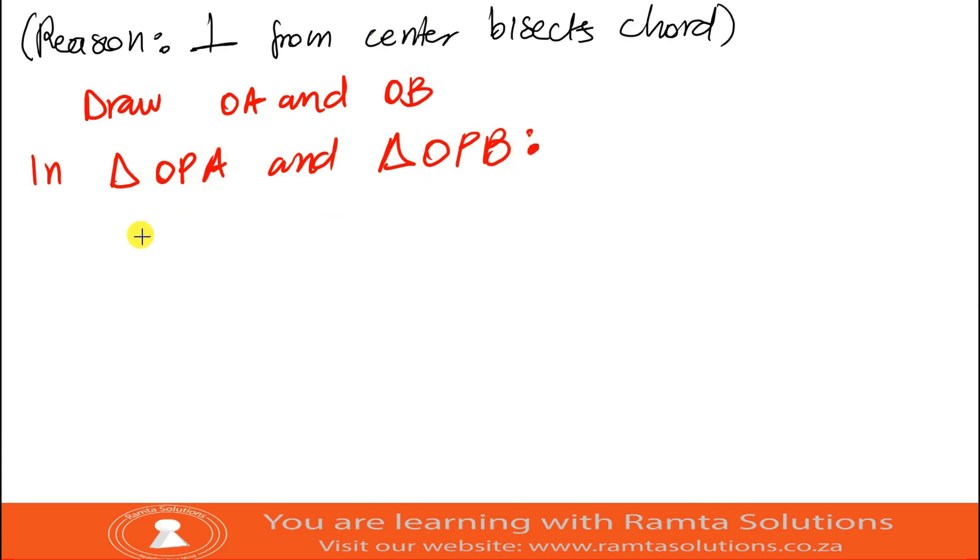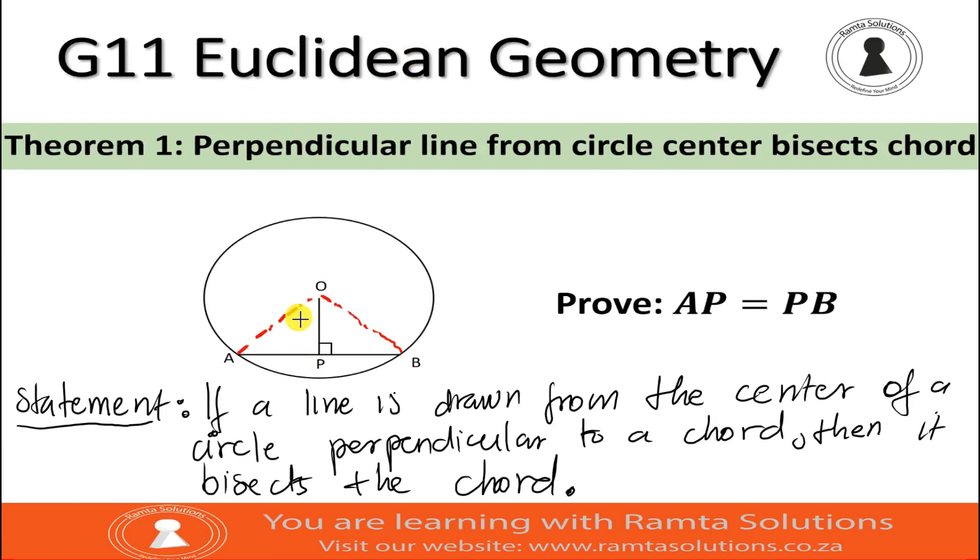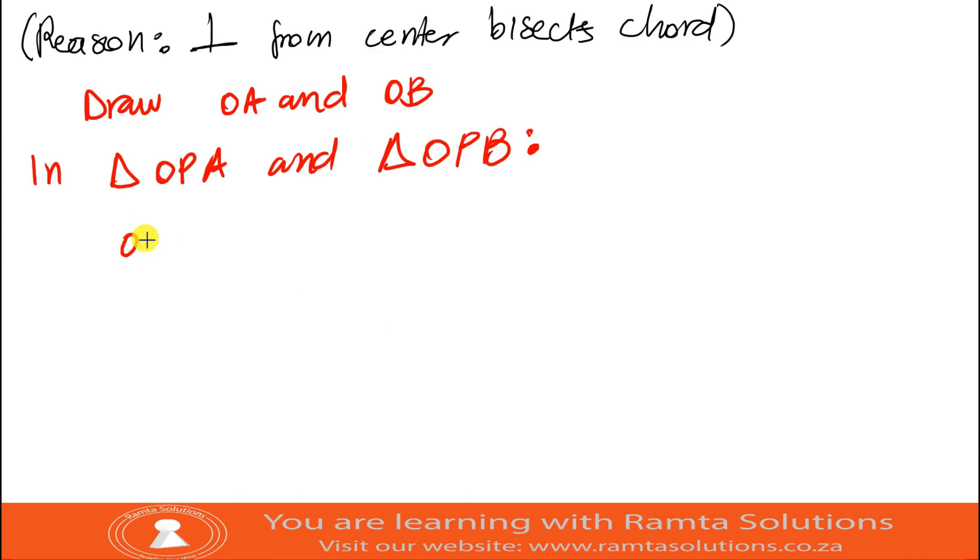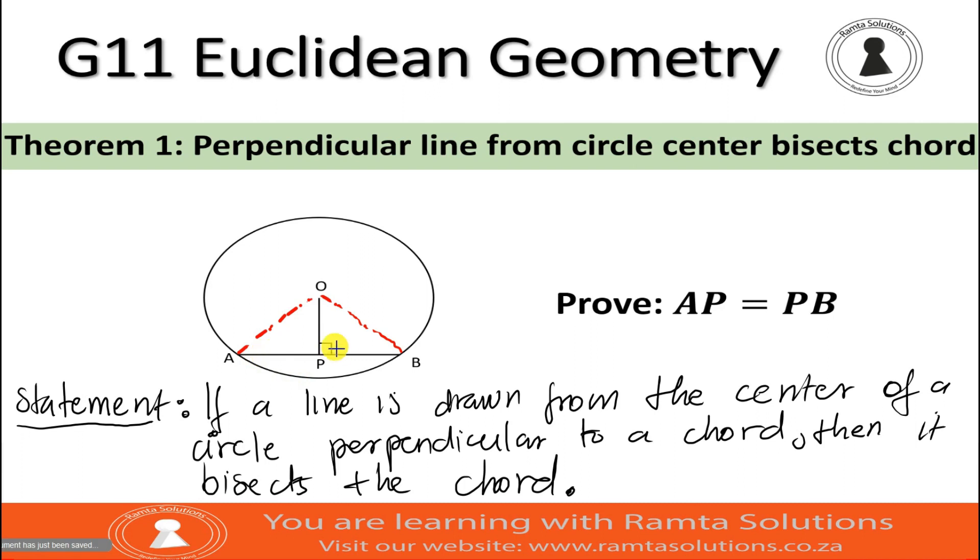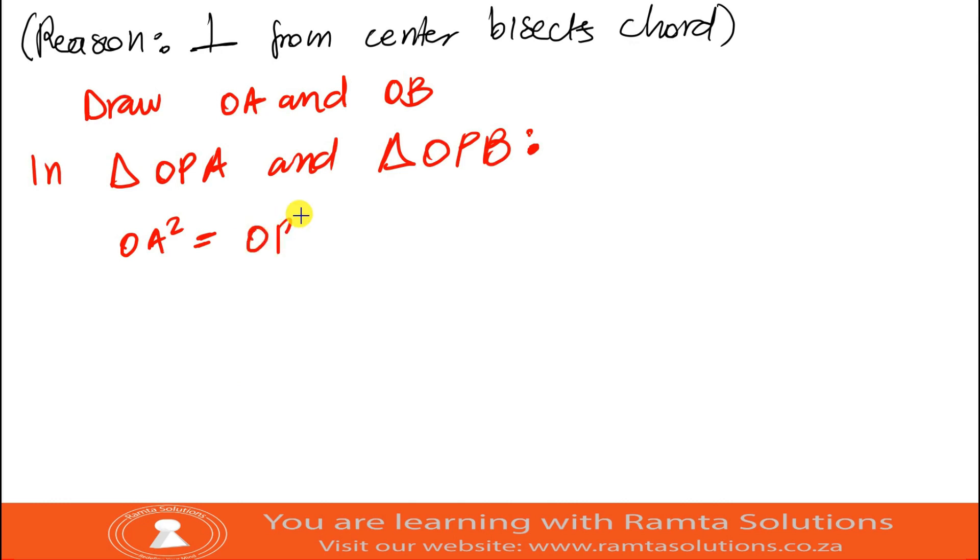I want you now to consider this. I'm going to use either of the triangles. Maybe let me use OPA. When you look at OPA, if I want to find any of the sides, in this case, maybe let me try to find OA. I can use Pythagoras theorem. So I will say OA squared equals OP squared plus AP squared. Why am I saying that? It's because Pythagoras said that. So this is my reason. So I'm going to say Pythagoras.